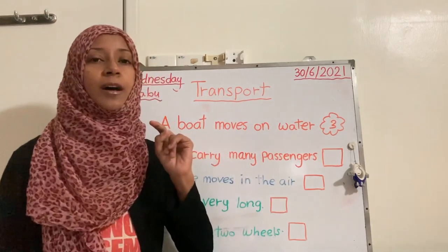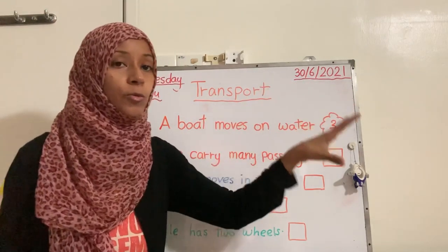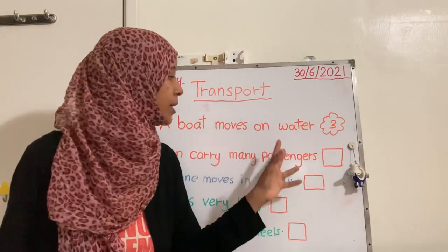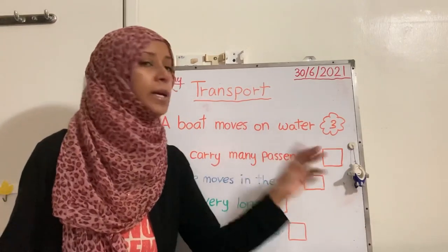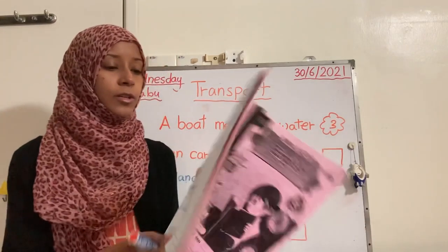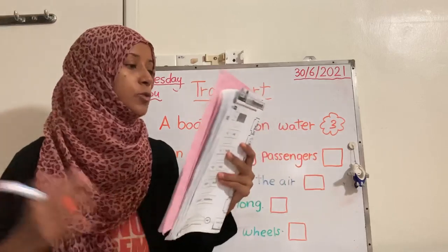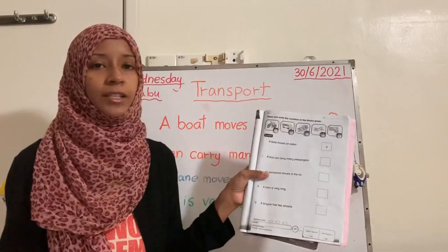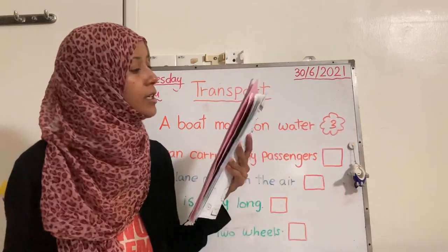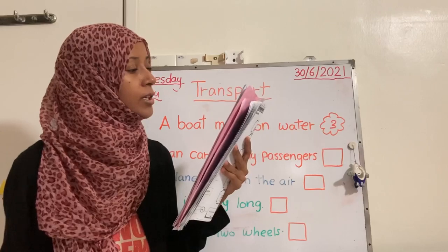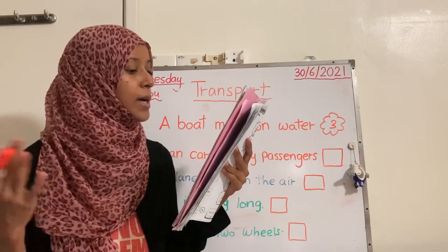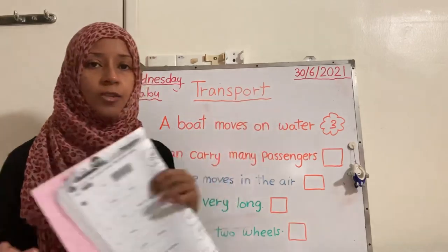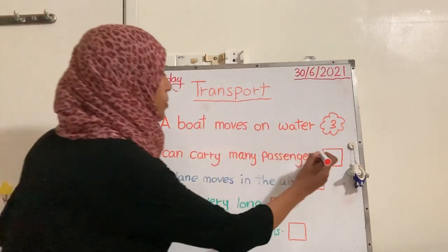Passengers are the people who will be sitting inside the bus — we call them passengers. So which one is the bus picture? Try to find it. Is it number three? Yes, correct — it's number two.